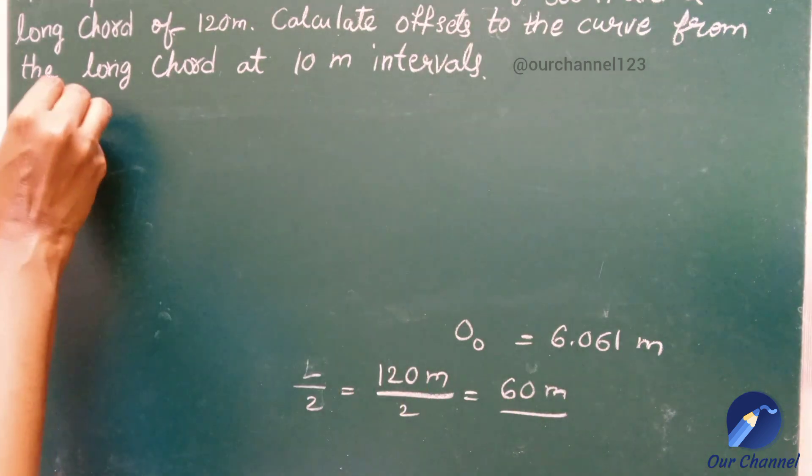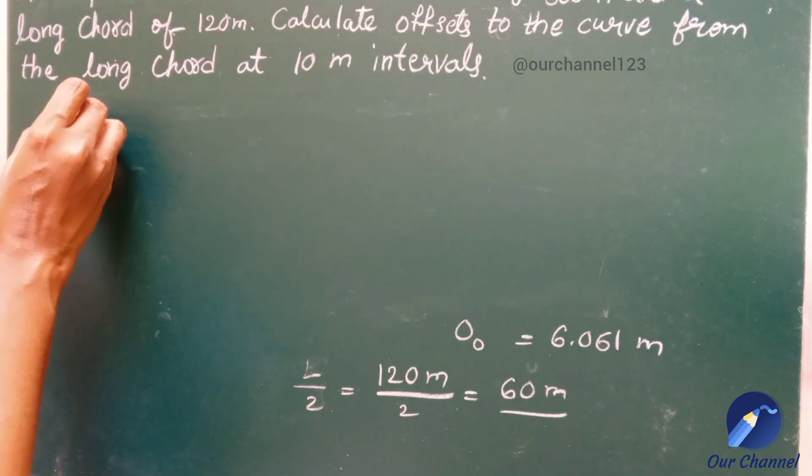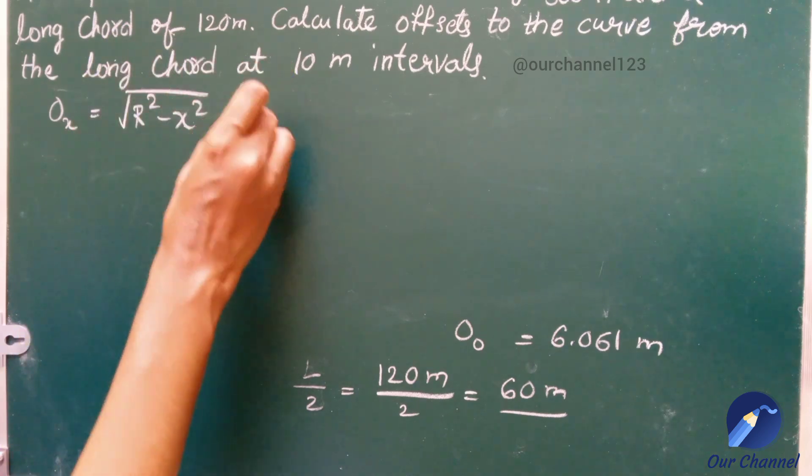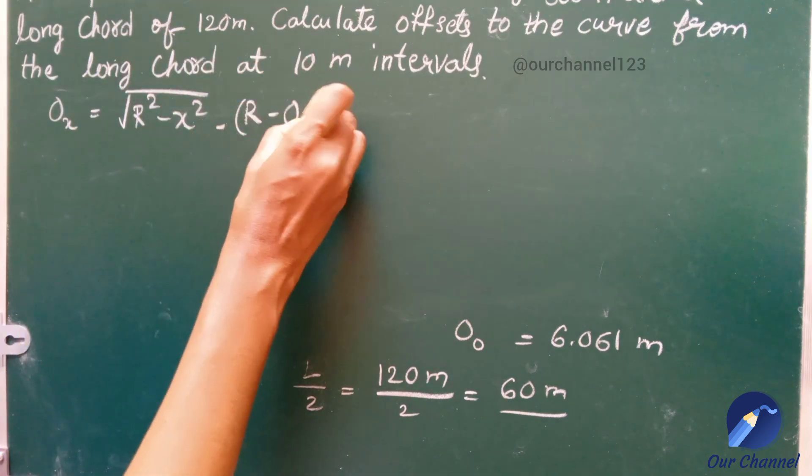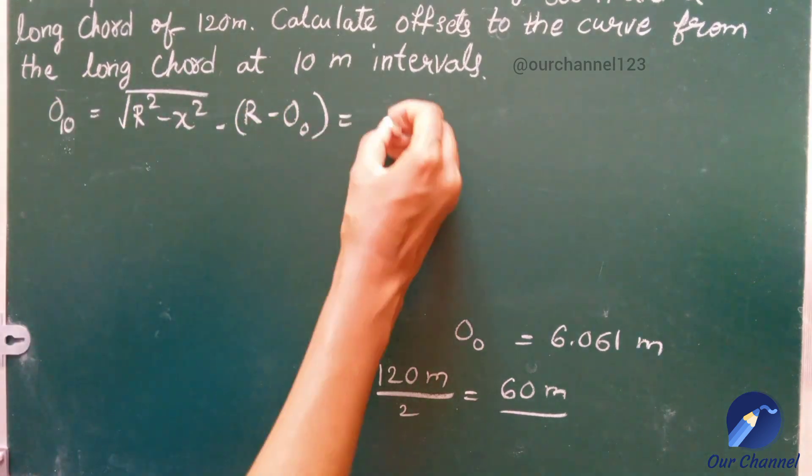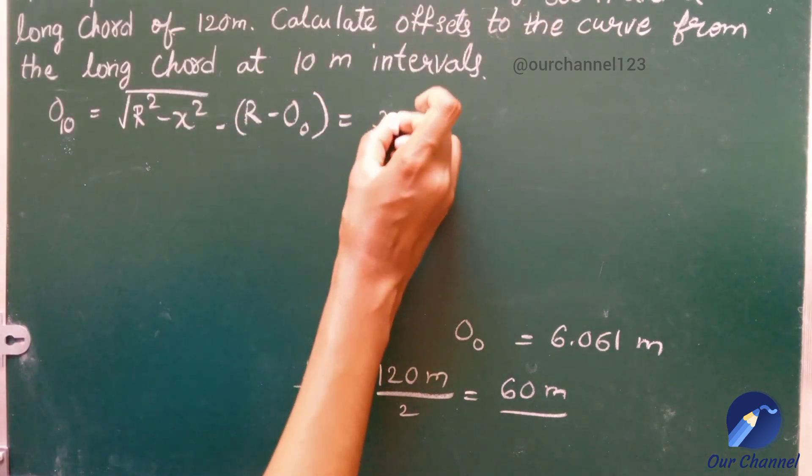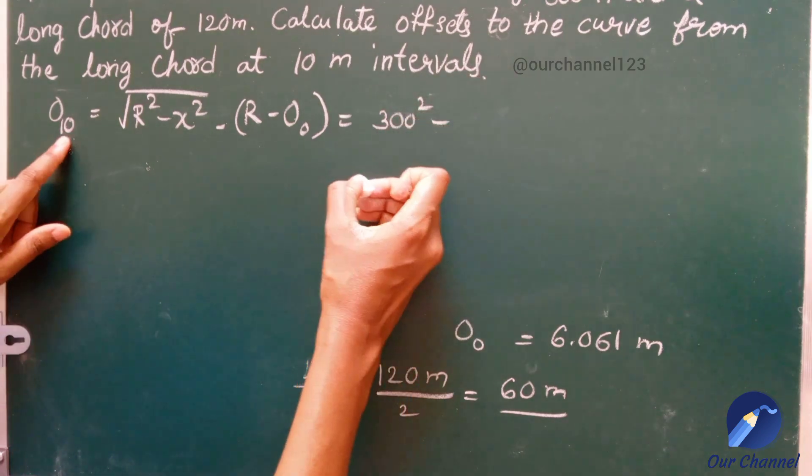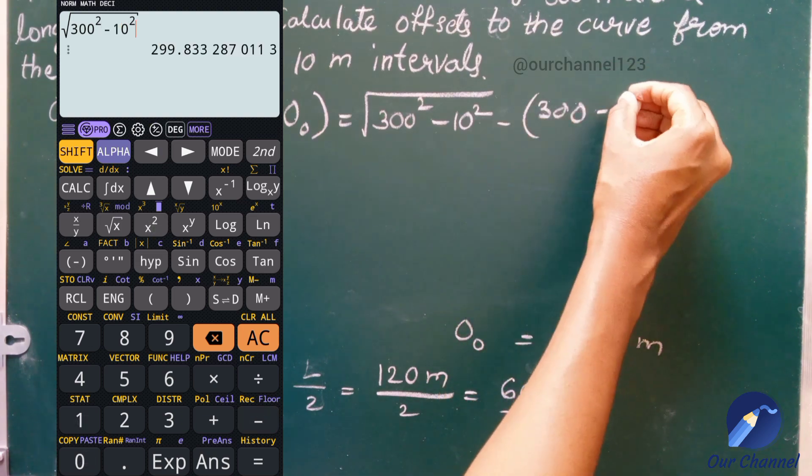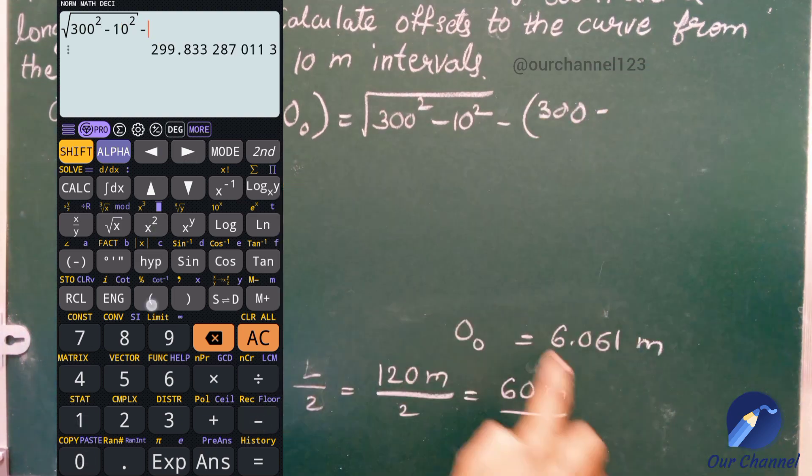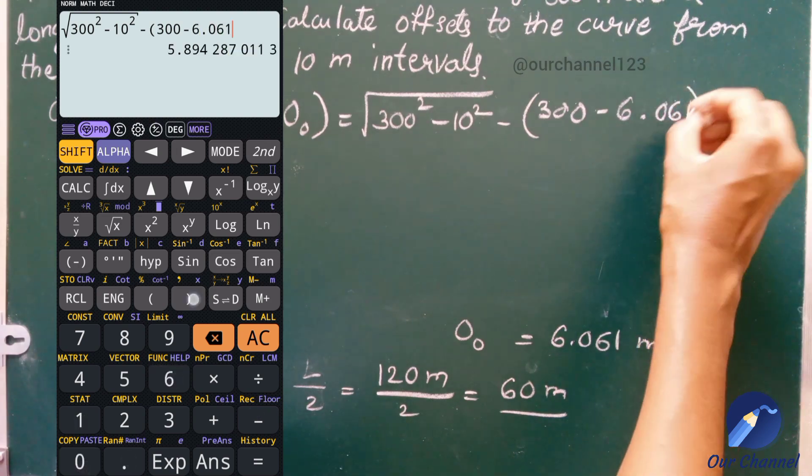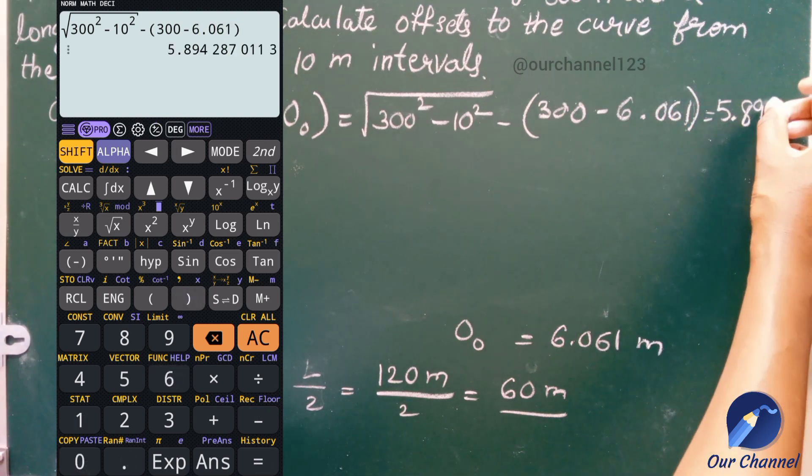Now we should calculate the ordinates at 10 meter intervals. The formula is Oₓ equal to square root of R square minus x square minus (R minus O₀). Let us calculate it at 10 meters first. R is 300, x is 10, 300 minus O₀ is 6.061. We will get the answer as 5.894 meters.